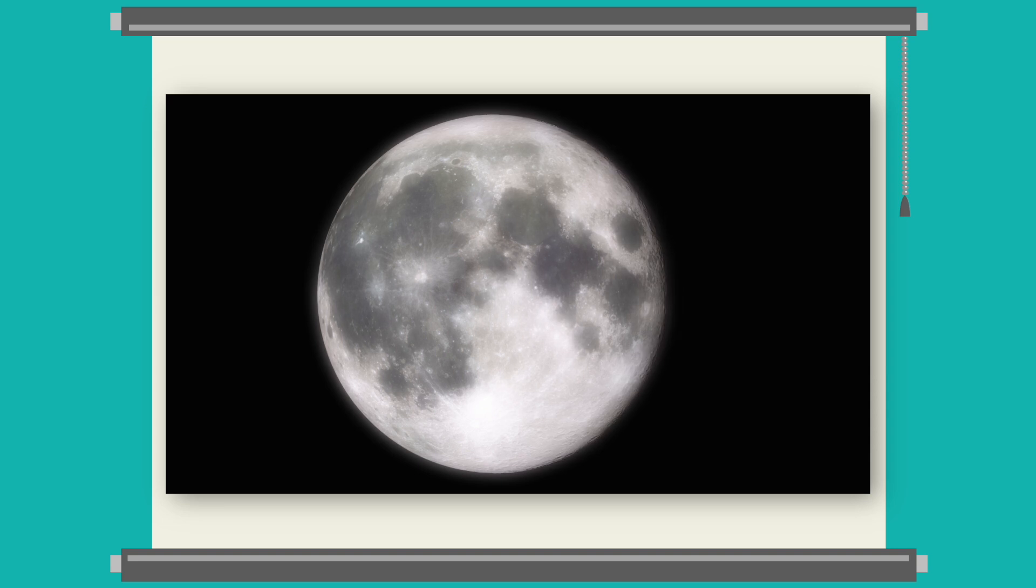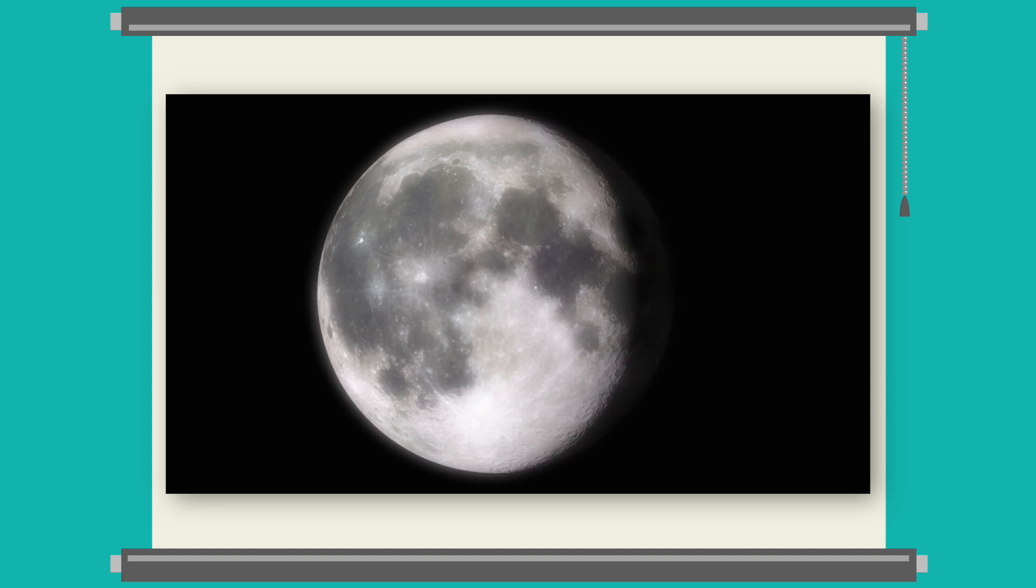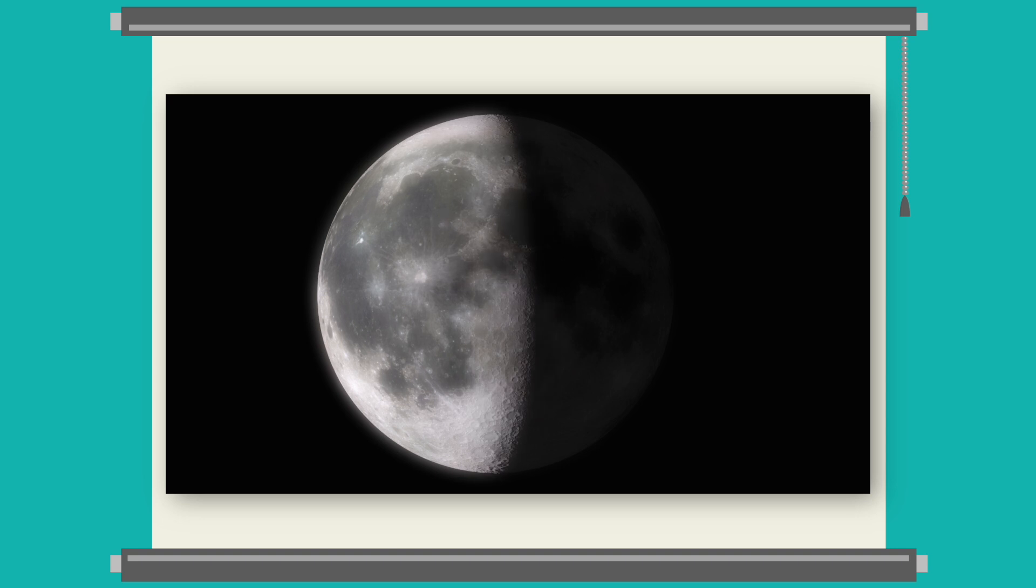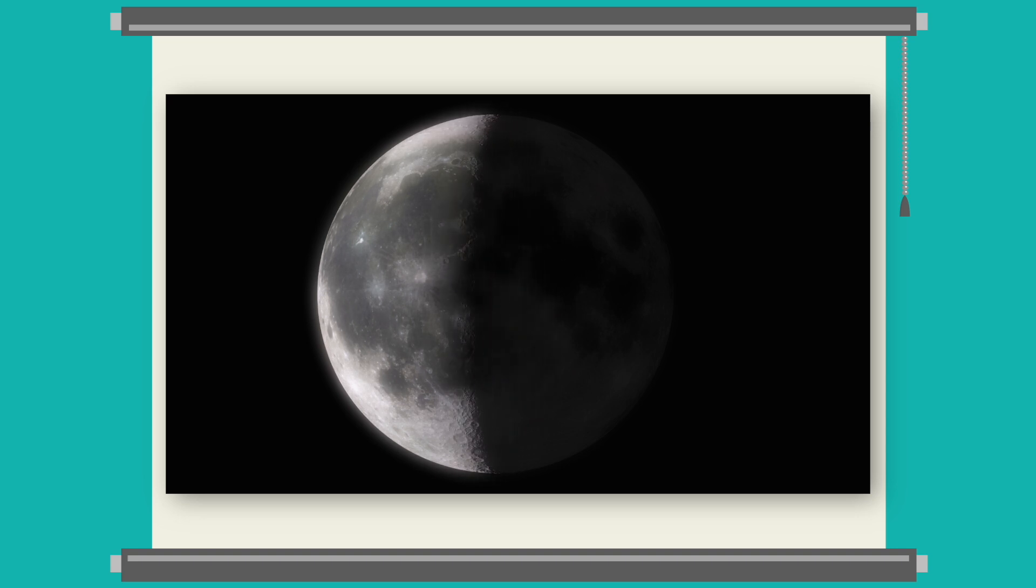These different shadows we see as the moon moves through its orbit are called the phases of the moon. The shadow covers the moon more and more until it's all the way behind the earth. It looks like the moon is gone, but it's not. It's just completely in shadow.